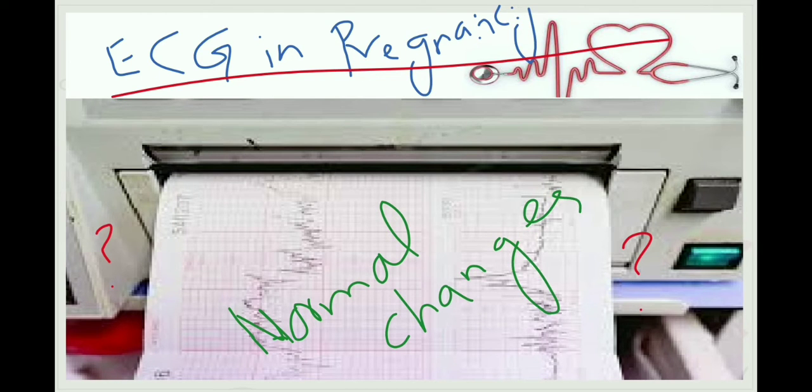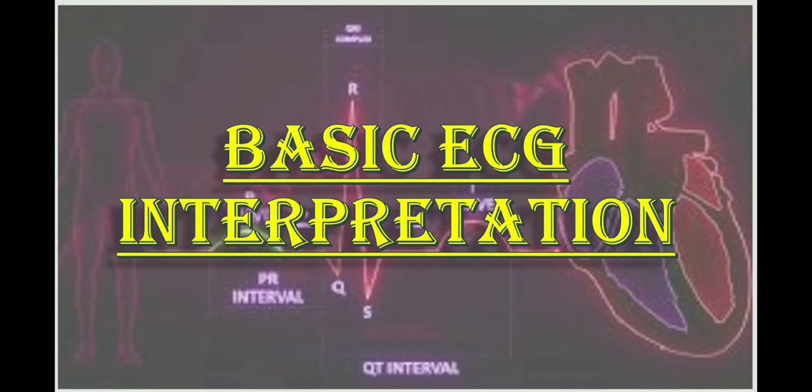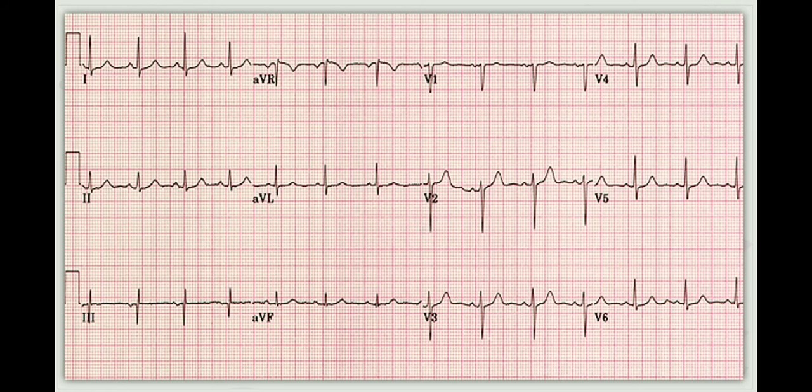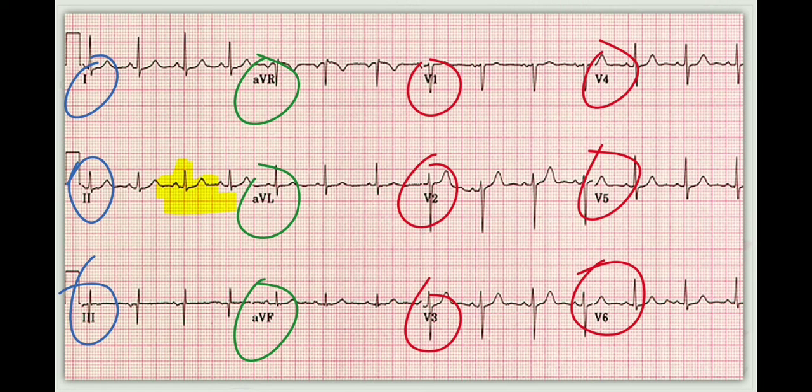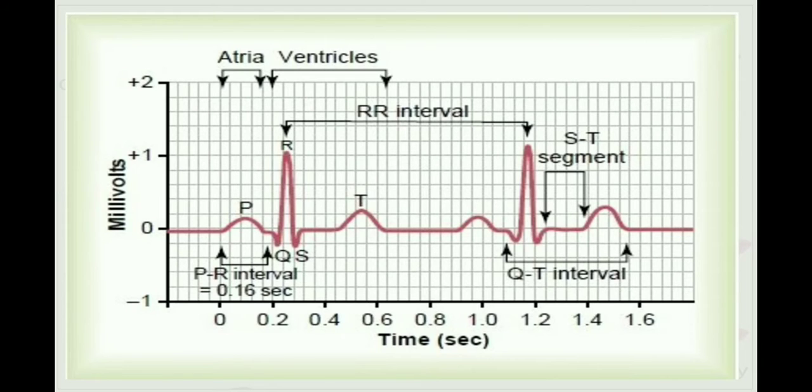Before discussing the changes of ECG in pregnancy, let us discuss basic ECG interpretation. The 12 lead ECG is made up of 3 standard limbs 1, 2, 3 and the augmented limbs AVR, AVL, AVF and 6 precordial leads V1, V2, V3, V4, V5 and V6. Every ECG has P, Q, R, S, T wave complexes along with certain segments. Let us briefly discuss those waves and segments.